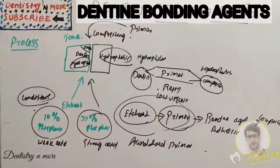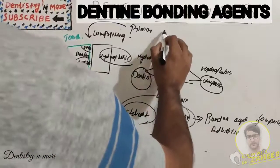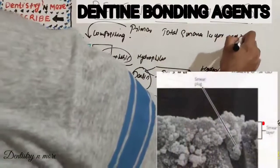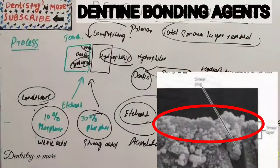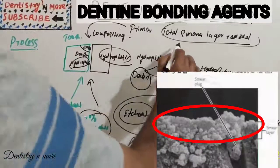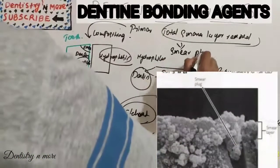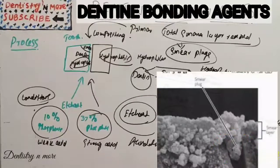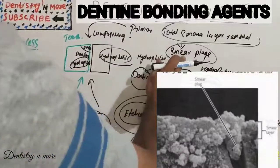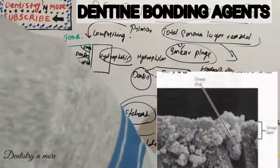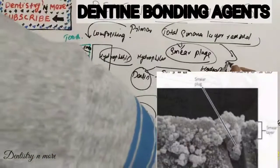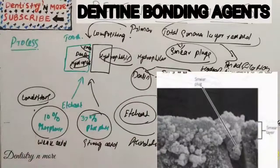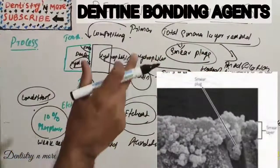In the beginning of bonding agents, the concept was total smear layer removal. Using a strong acid, the complete smear layer was removed, including the smear plugs. However, smear plugs should not be removed - once totally removed, bonding substantially decreased due to the absence of smear plugs. Later it was believed that modification of the smear layer - not complete removal - was preferable, leaving the smear plugs intact.